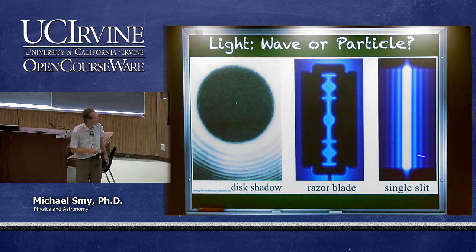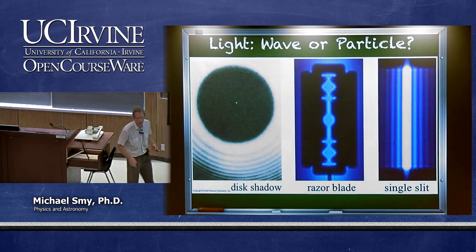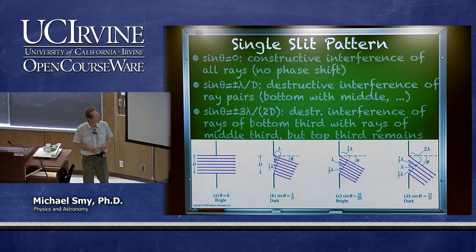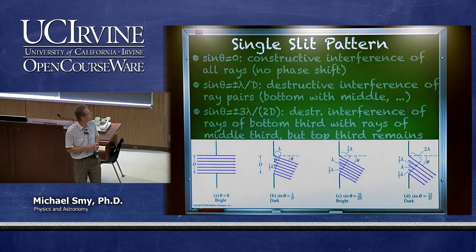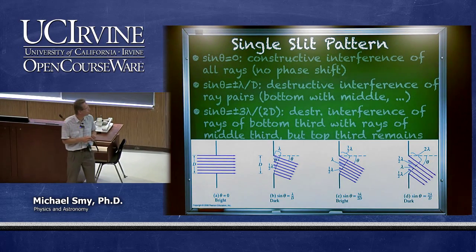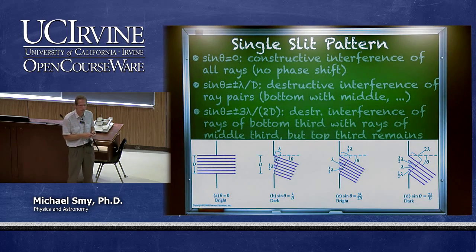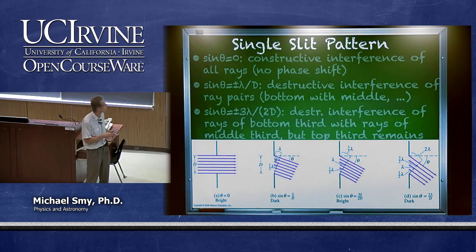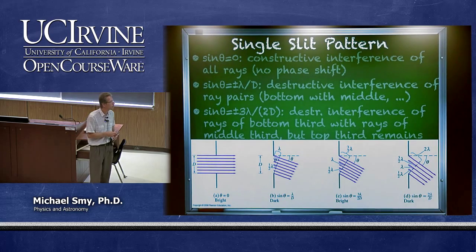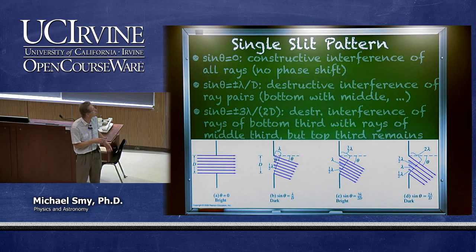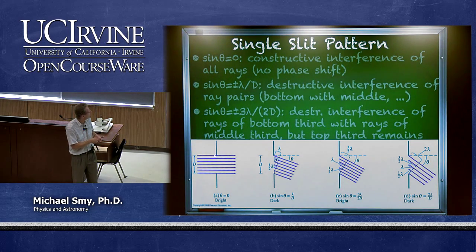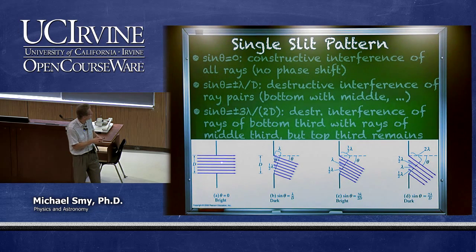To discuss a single slit pattern, we use Huygens' principle, which says that each portion of a wave front can be considered as the origin of a spherical wave, and the next wave front is just the envelope of those Huygens waves. So if we have a light beam incident on a slit, each portion of the slit originates more light waves.